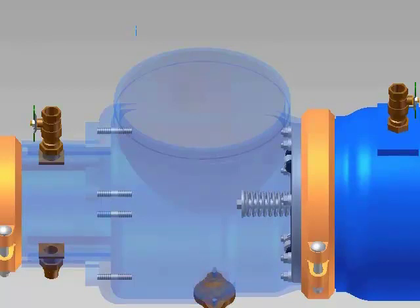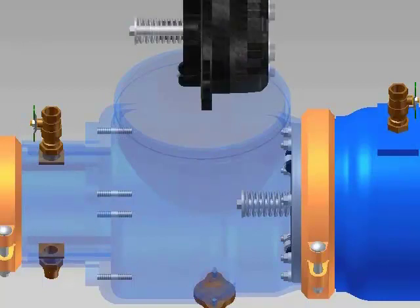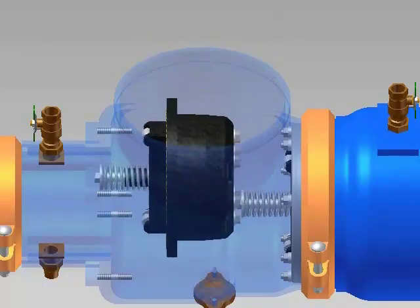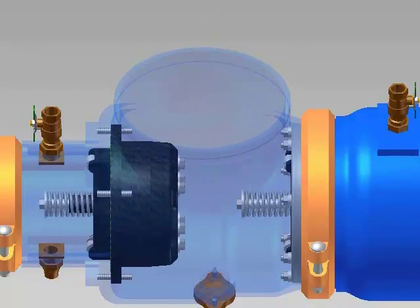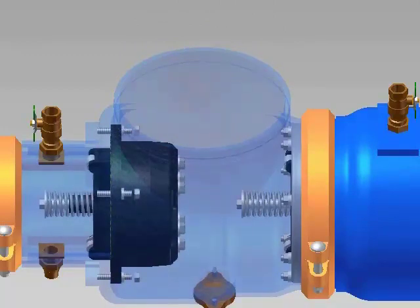When placing the check assemblies back onto the studs in the body, you want to make sure the O-ring stays in its groove. Place number 1 check assembly onto its studs in the body. Place the four washers and nuts on the studs and tighten the nuts evenly.